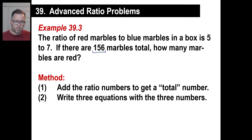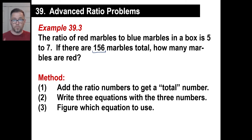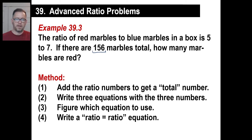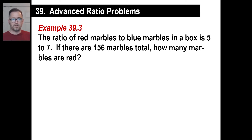I've condensed it down from the Saxon book. Number one: add the ratio numbers to get a total number. In this case, five red and seven blue gives us 12 as our total number. Number two: write three equations with the three numbers. Number three: figure out which equation to use. We've done ratio problems before — remember the wedding cake with raisins and bacon. Last step: write a ratio equals ratio equation, just like we did before.